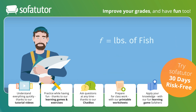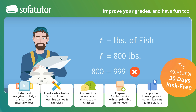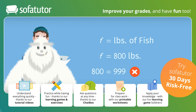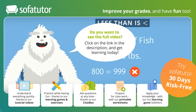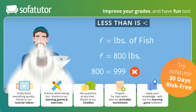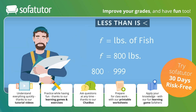During the second month of his fishing trip, Skeeter caught 800 pounds of fish. What symbol can we use to relate the numbers 800 and 999? We know that 800 is not the same as 999. This is no longer an equality, but an inequality, so we have to use a different symbol. The symbol we use is called the less than symbol, since the smaller of the two numbers comes first. This is read as 800 is less than 999.